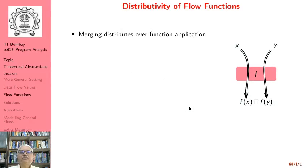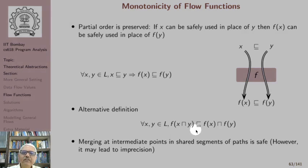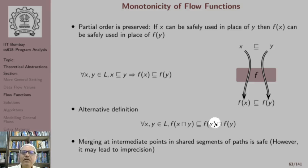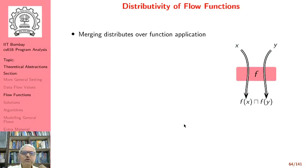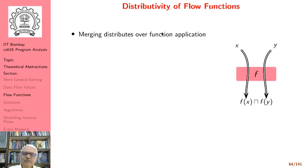There is another property which is distributivity. Distributivity says merging distributes over flow function application — meaning it does not matter whether we merge the values first and then apply the flow function, or whether we first apply the flow function and then merge the values. The results are guaranteed to be identical if the flow function is distributive. So we have F of (X meet Y) equal to F(X) meet F(Y).